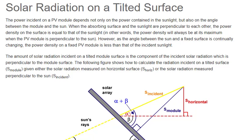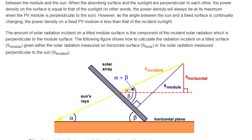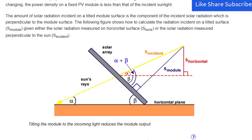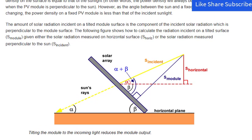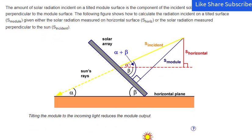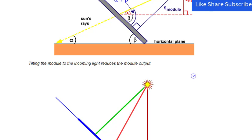Solar radiation on a tilted surface. The power incident on a PV module depends not only on the power contained in the sunlight, but also on the angle between the module and the sun. When the absorbing surface and the sunlight are perpendicular to each other, the power density on the surface is equal to that of the sunlight. In other words, the power density will always be at its maximum when the PV module is perpendicular to the sun. However, as the angle between the sun and a fixed surface is continually changing, the power density on a fixed PV module is less than that of the incident sunlight.